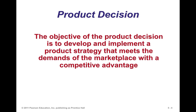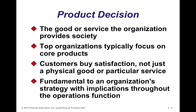When talking about product design, that product has to have some objective. The objective of product decision and design is to develop and implement a product strategy that meets marketplace demands with some competitive advantage attached to it. When you think of the ten decision areas of operations management, we may have to make service and product decisions — there is a need and a customer market out there, and we have to be able to produce that product or service to meet the needs of customers.